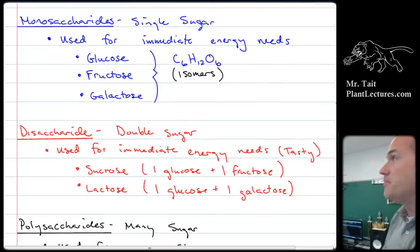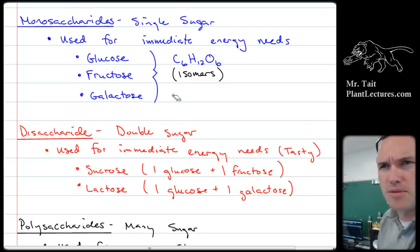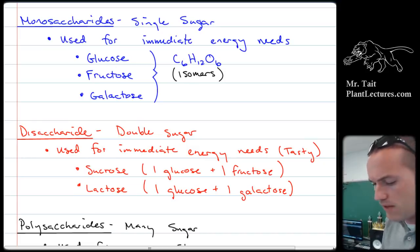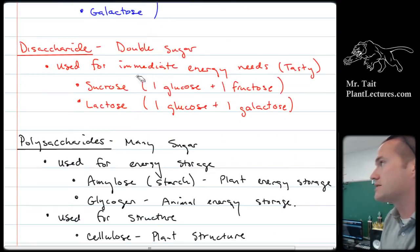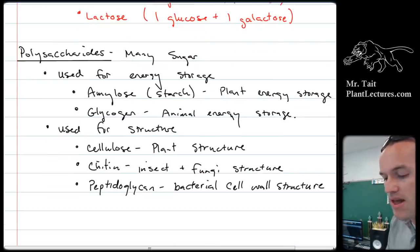The monosaccharides that we talked about the most were the hexoses, which means that they have six carbons, but we also talked a little bit about pentoses in DNA and RNA. The common hexoses are glucose, fructose, and galactose. And then if you have two monosaccharides bonded together, that's a disaccharide, and many monosaccharides bonded together is a polysaccharide.